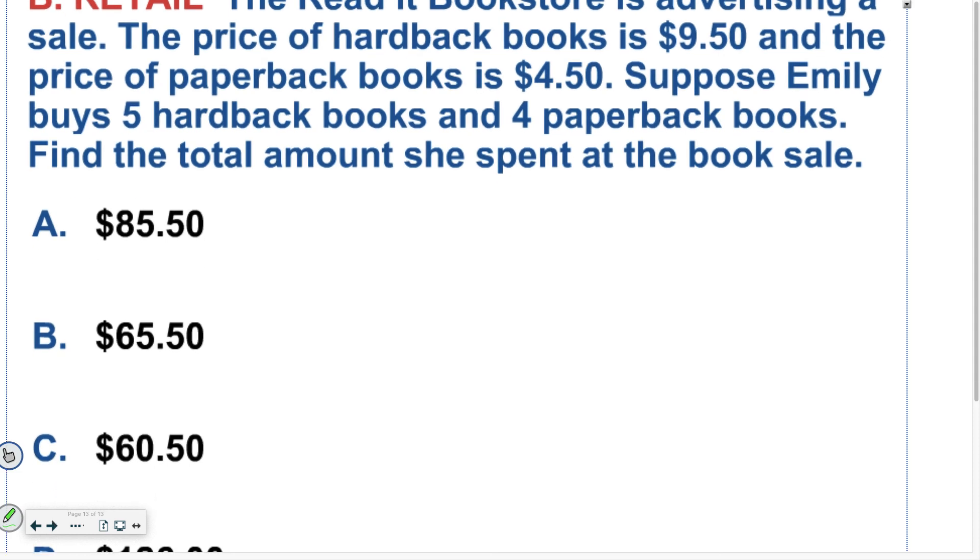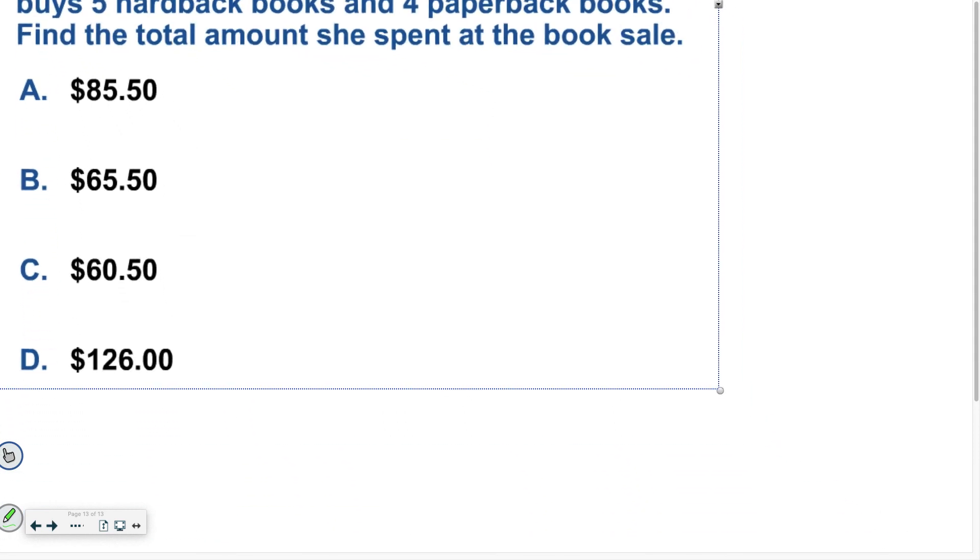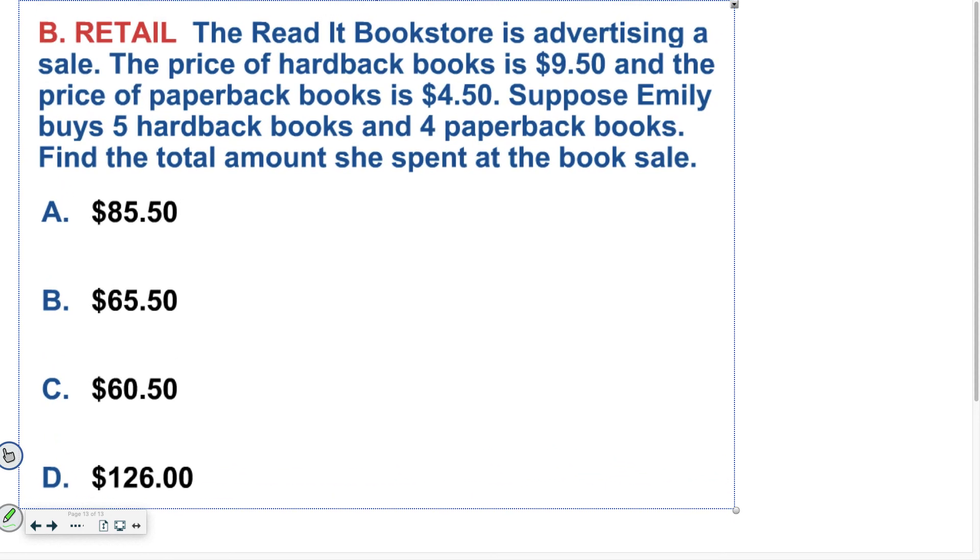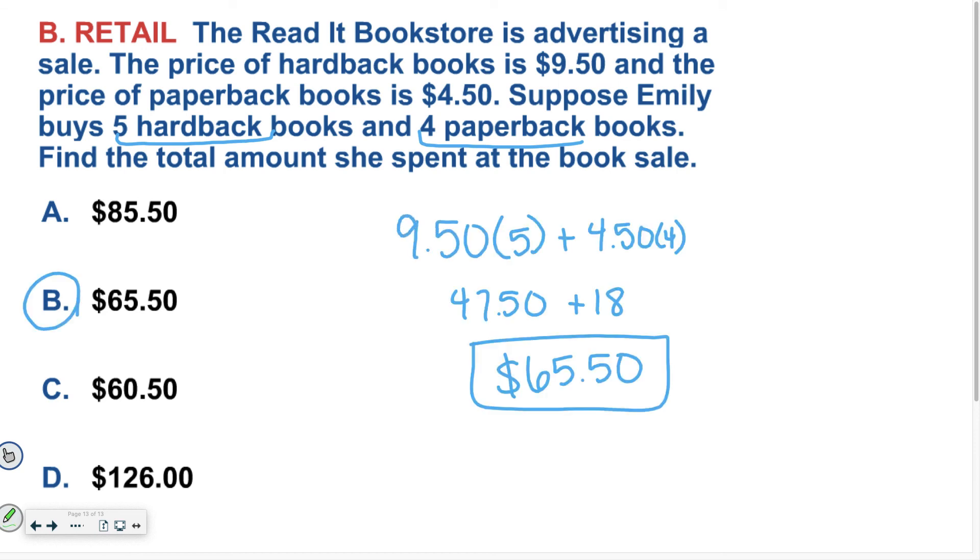Now you want to take that expression from that last slide. And now I want to say, suppose Emily buys five hardback books and four paperback books. Find the total amount she spent at the bookstore. Good luck. All right, hopefully for this question, when you plugged in five hardback books and four paperback books, you ended up at a total of $65.50. If not, please be sure to reach out for some help. And I'm more than happy to help you. And I hope you have a wonderful day.